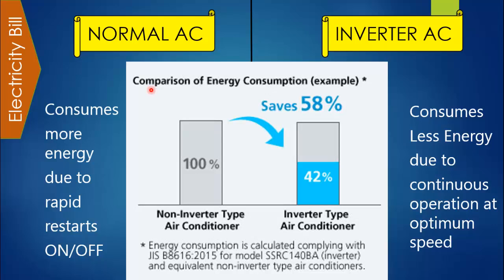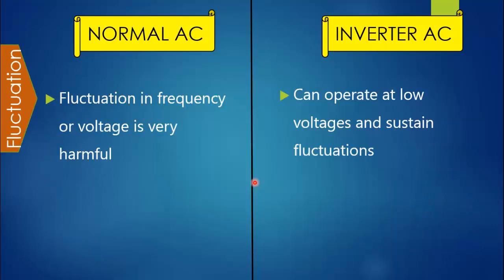The most important question is the energy consumption of a normal AC versus an inverter AC. Because of rapid start-stops, the motor of a normal AC will consume more energy. Whereas because of continuous operation at lower flow rate and lower speed, the inverter AC will consume less energy and maintain room temperature around the setpoint. According to this reference, the inverter AC can save up to 58% of electricity when allowed to operate continuously.